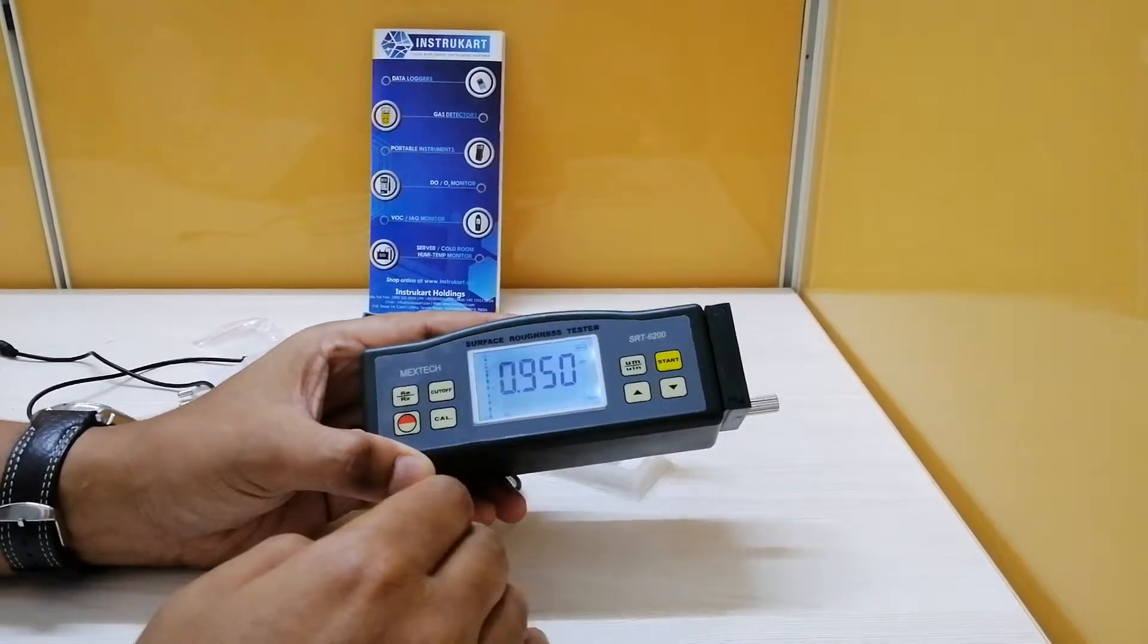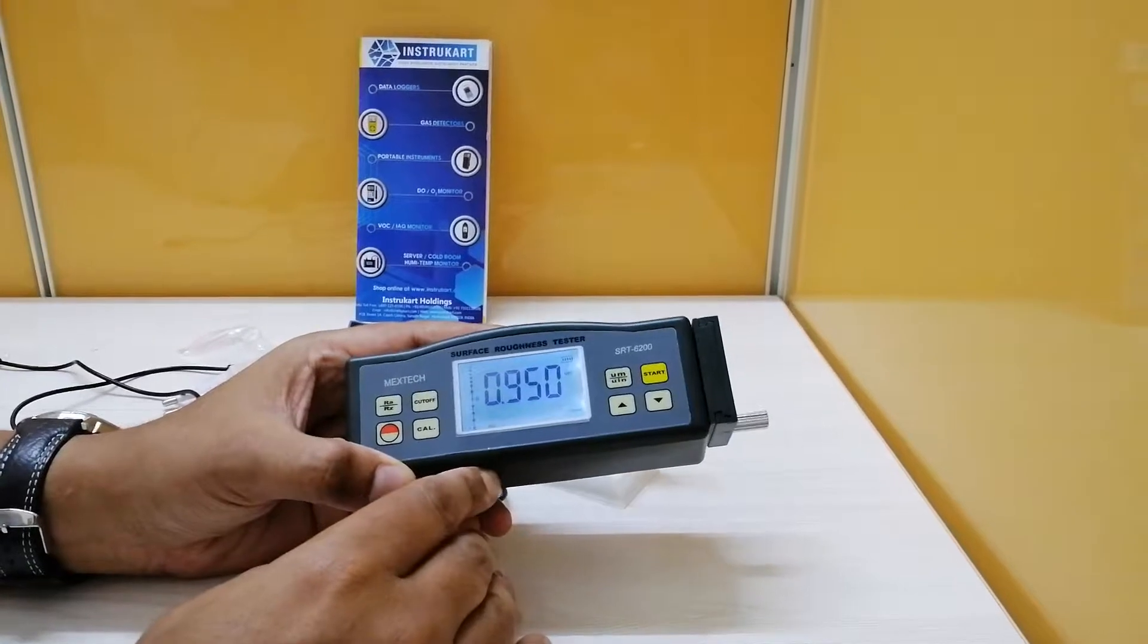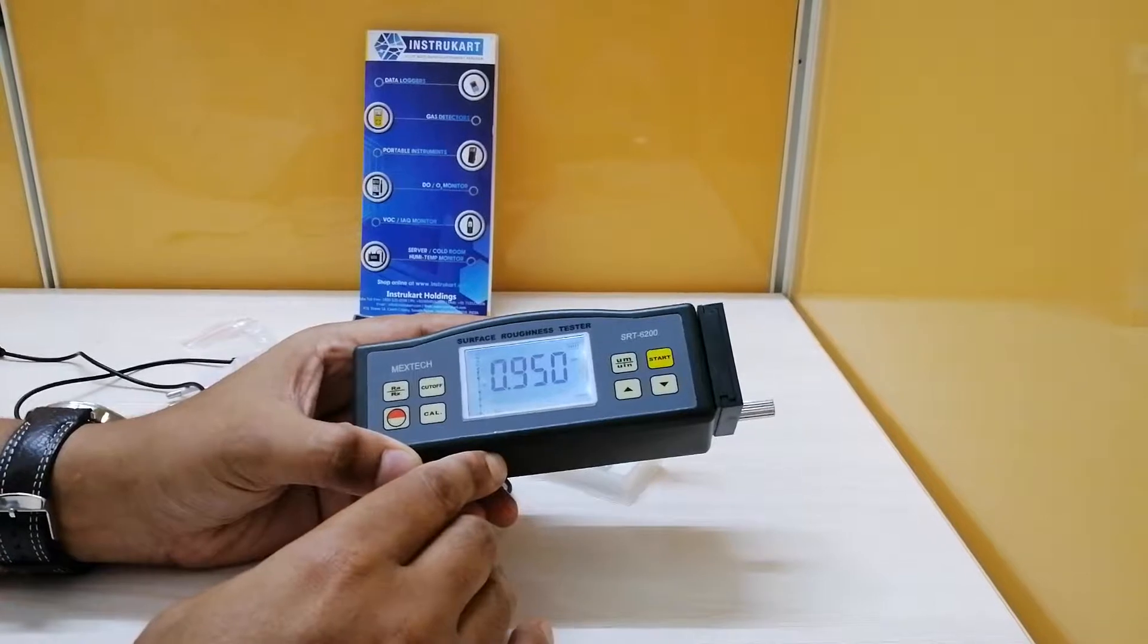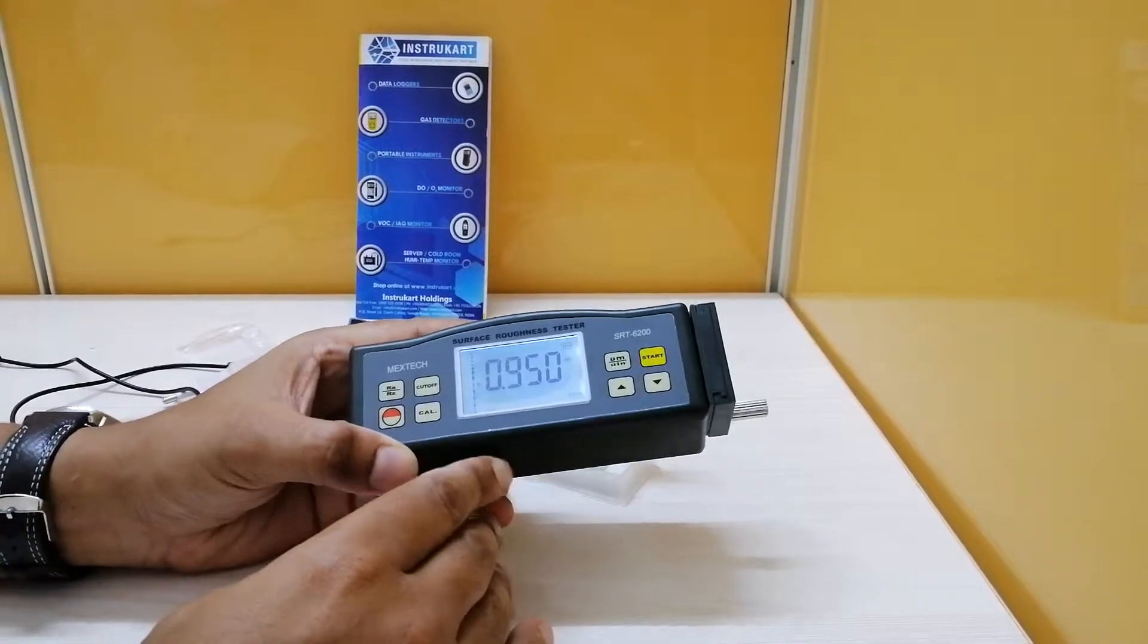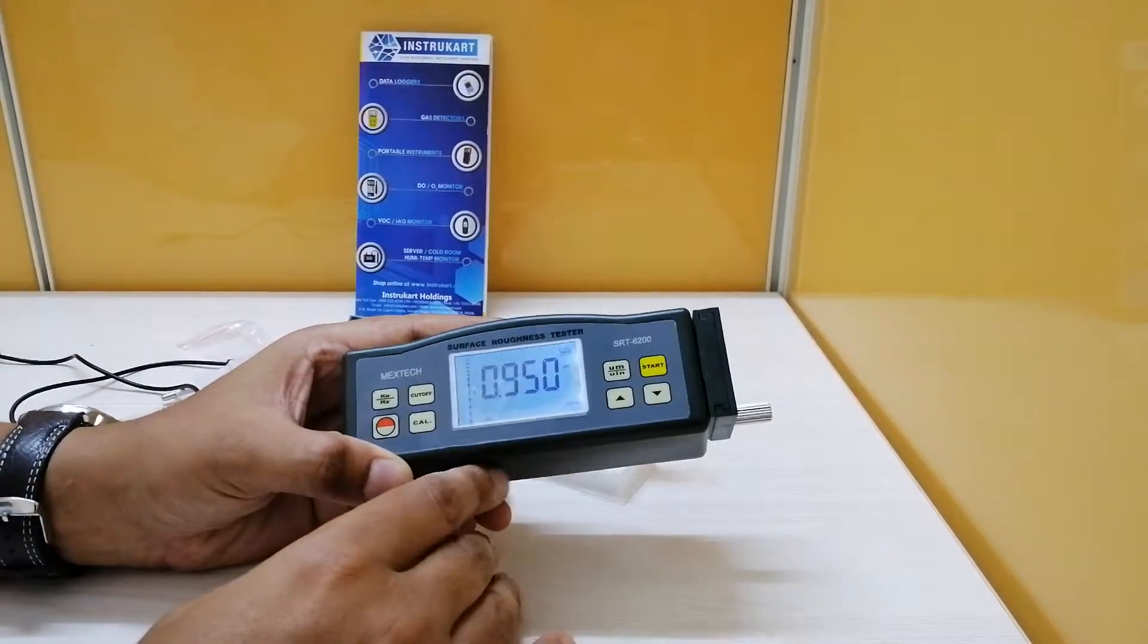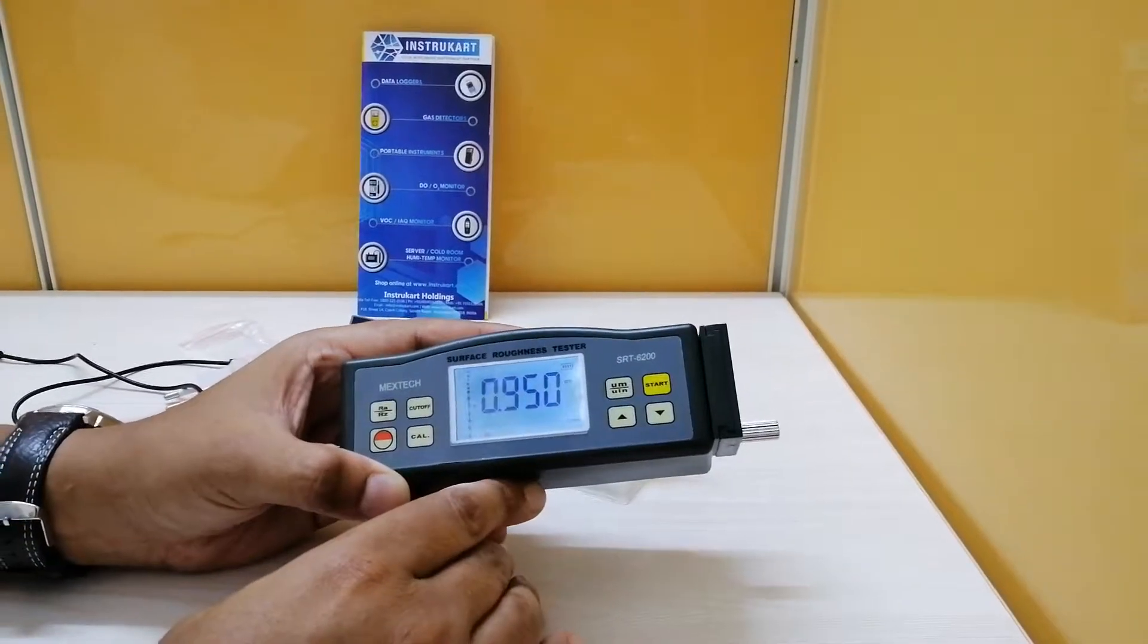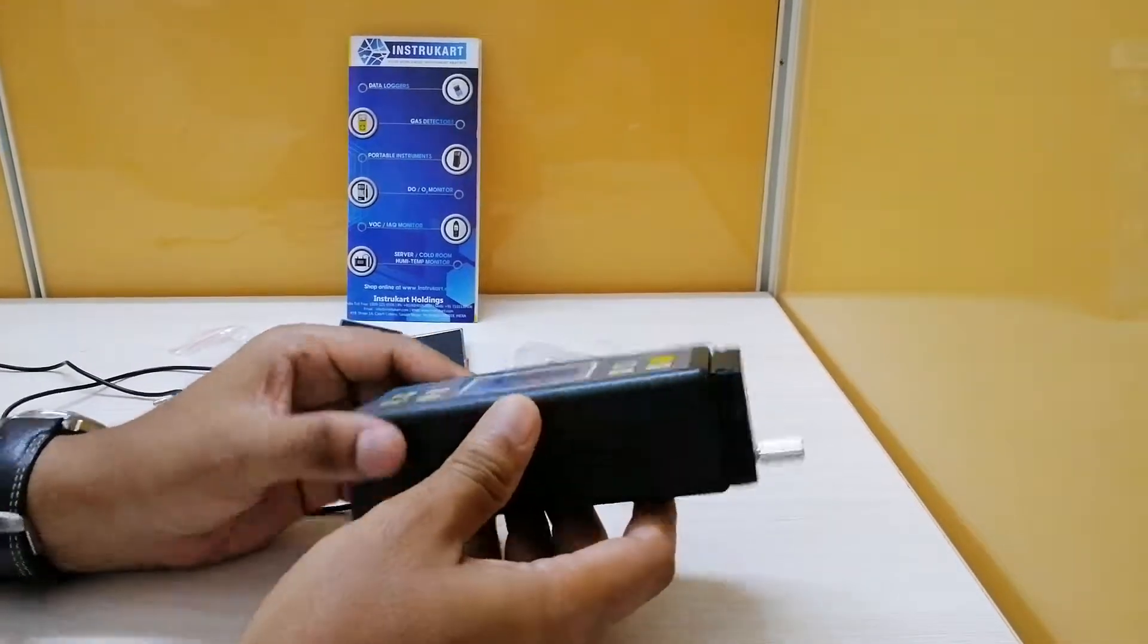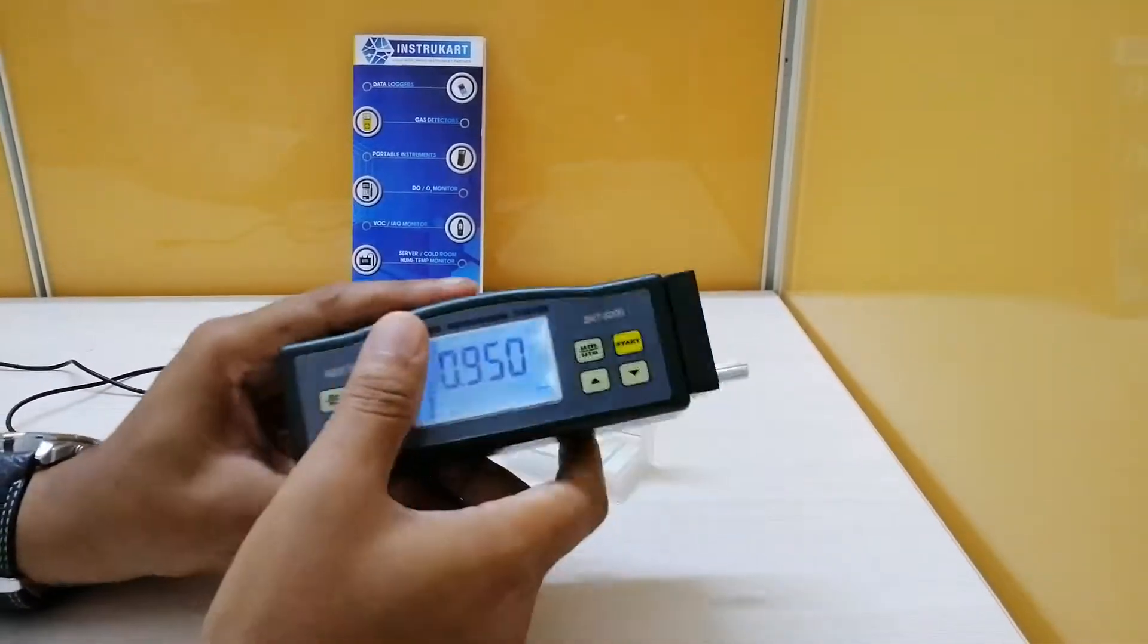The display range for RA is 0.05 to 10 micrometers or 1 to 4 micro inches. For RZ, it is 0.020 to 100 micrometers or 0.780 to 4000 micro inches.